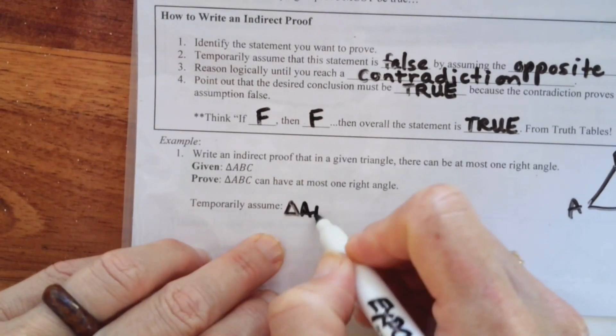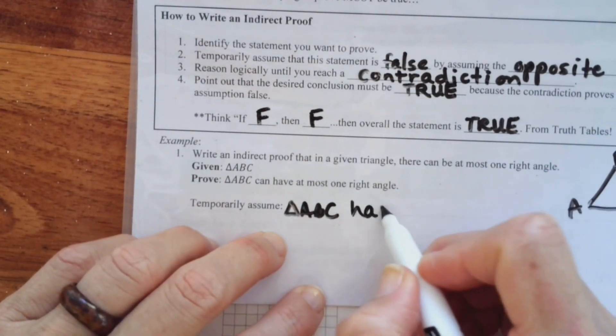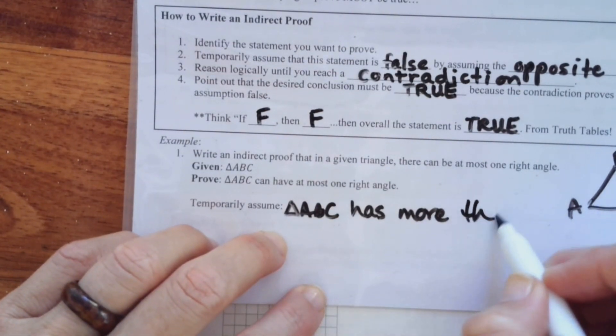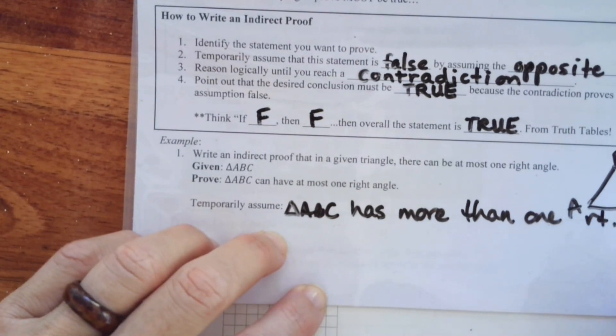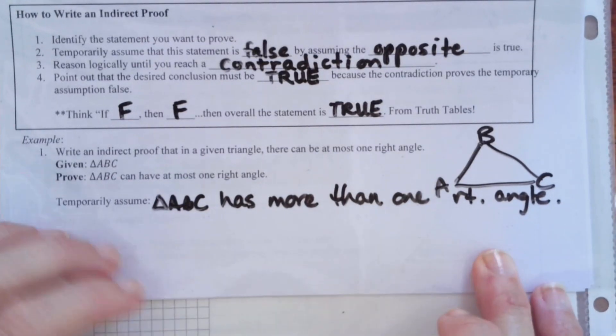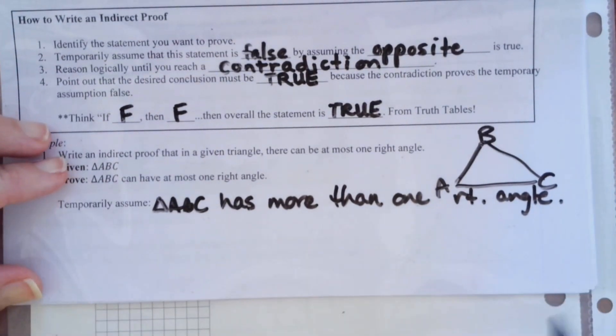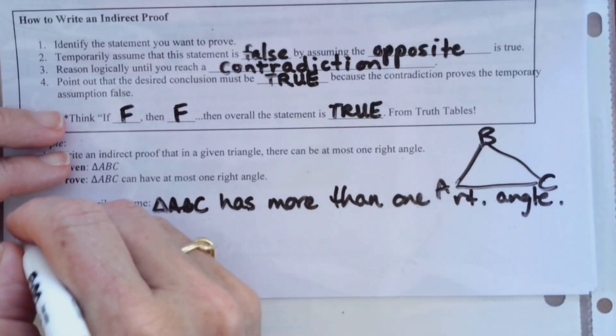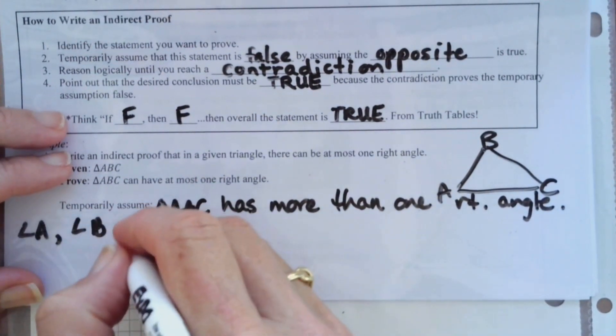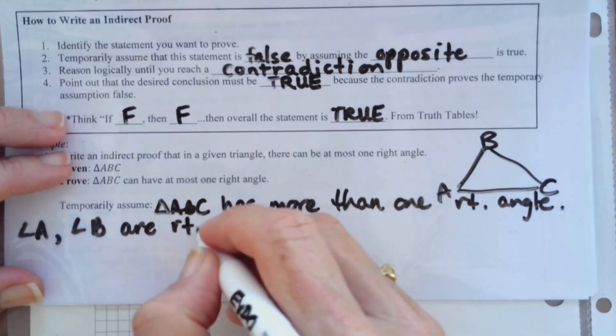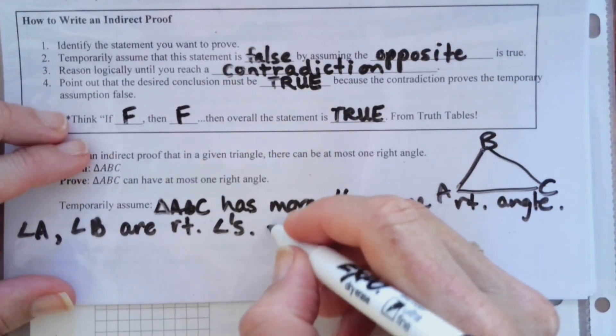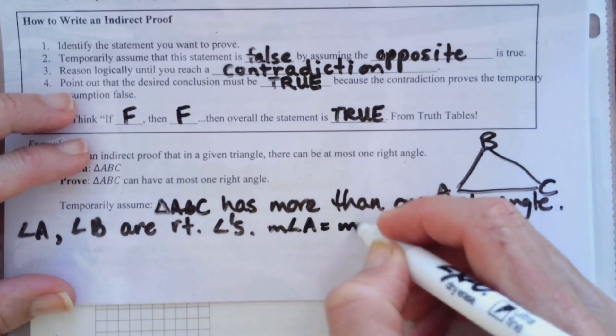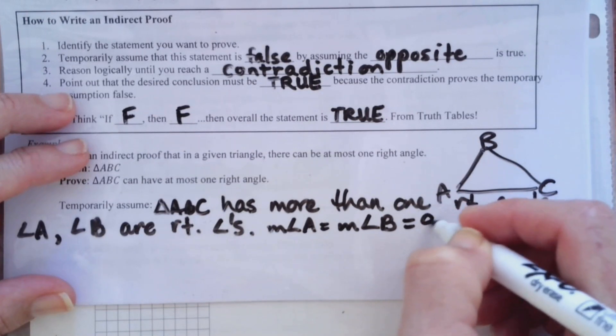So, I'm going to assume temporarily that A, B, C does have more than one right angle. So, let's say it has these two right angles. So, let's say angle A, angle B are right angles. That means that their measurement is equal to 90 degrees.